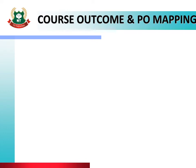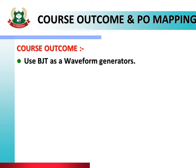This slide shows the course outcome for this chapter, Waveform Generator. The course outcome is to use BJT — bipolar junction transistor — as a waveform generator. The oscillator circuit we will build is what we call a waveform generator, and we will build it using bipolar junction transistors.